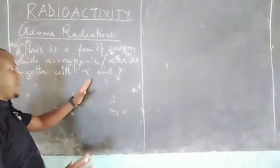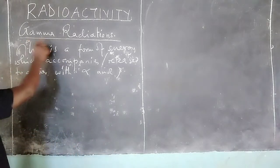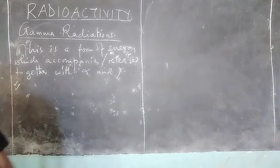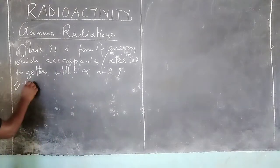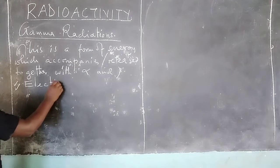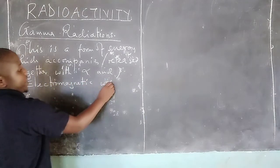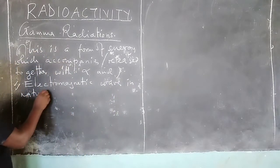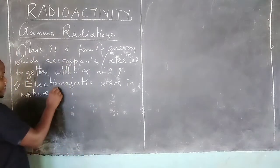During the release of beta particles and alpha particles, we have what we call gamma radiations or gamma energy, which is released together with them. One of the properties of gamma radiations is that they are electromagnetic waves in nature.